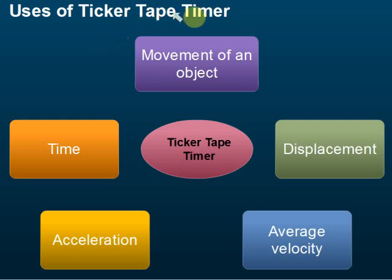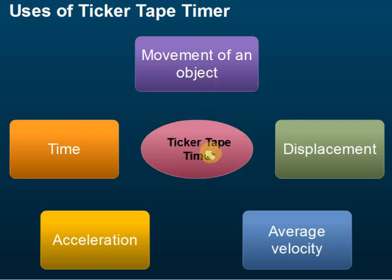The uses of a ticker tape timer: it can be used to measure time, and it can be used to analyze the movement of an object — from the distribution of the dots we can tell if it's accelerating or decelerating. We can also use it to find displacement, which is the distance between the dots, and we can use it to find average velocity and acceleration.